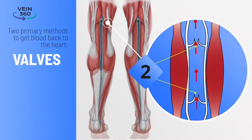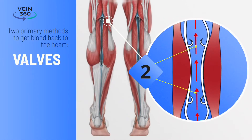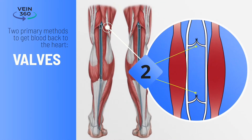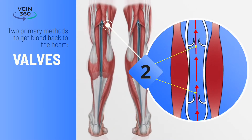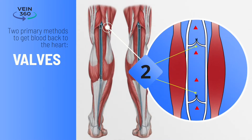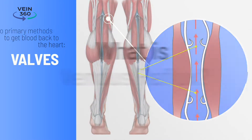The second method is valves. Valves act like one-way doors inside the veins. They allow the blood to come up, but not back down.